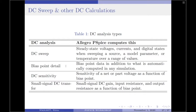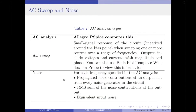If the type of the DC analysis is bias point detail, then bias point data in addition to what is automatically computed in any simulation profile will be computed. If the type is DC sensitivity, then the Allegro PSPICE computes sensitivity of a net or part voltage as a function of bias point. Lastly, if the type is small signal DC transfer, then the Allegro PSPICE computes small signal DC gain, input resistance, and output resistance as a function of bias voltage.